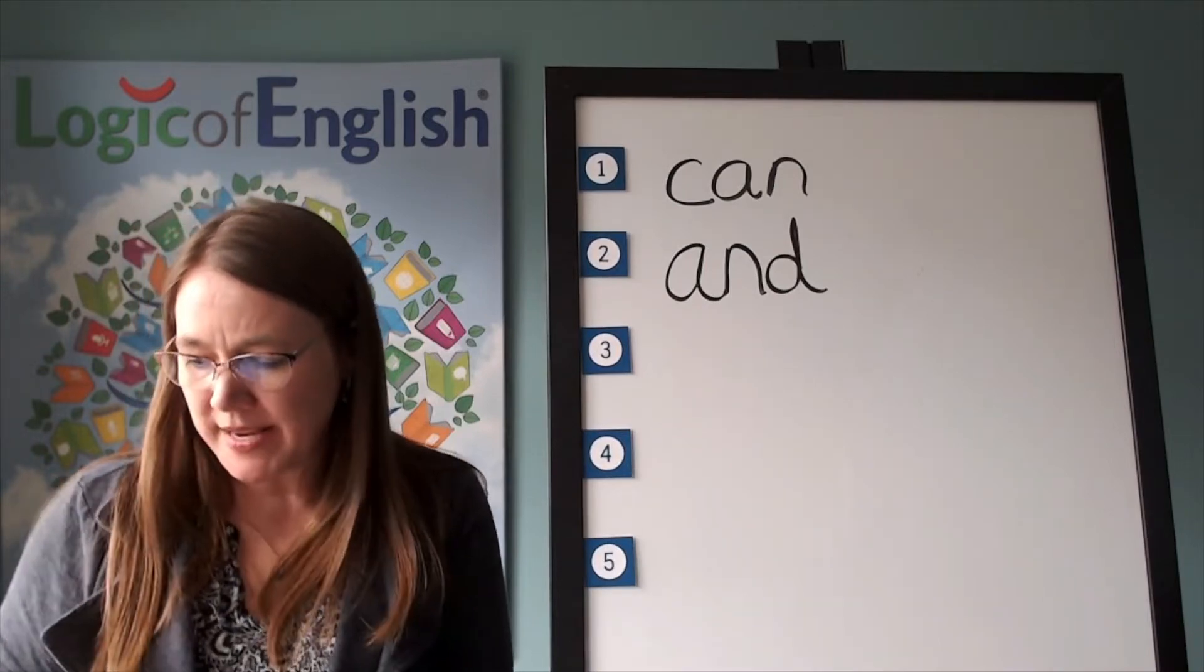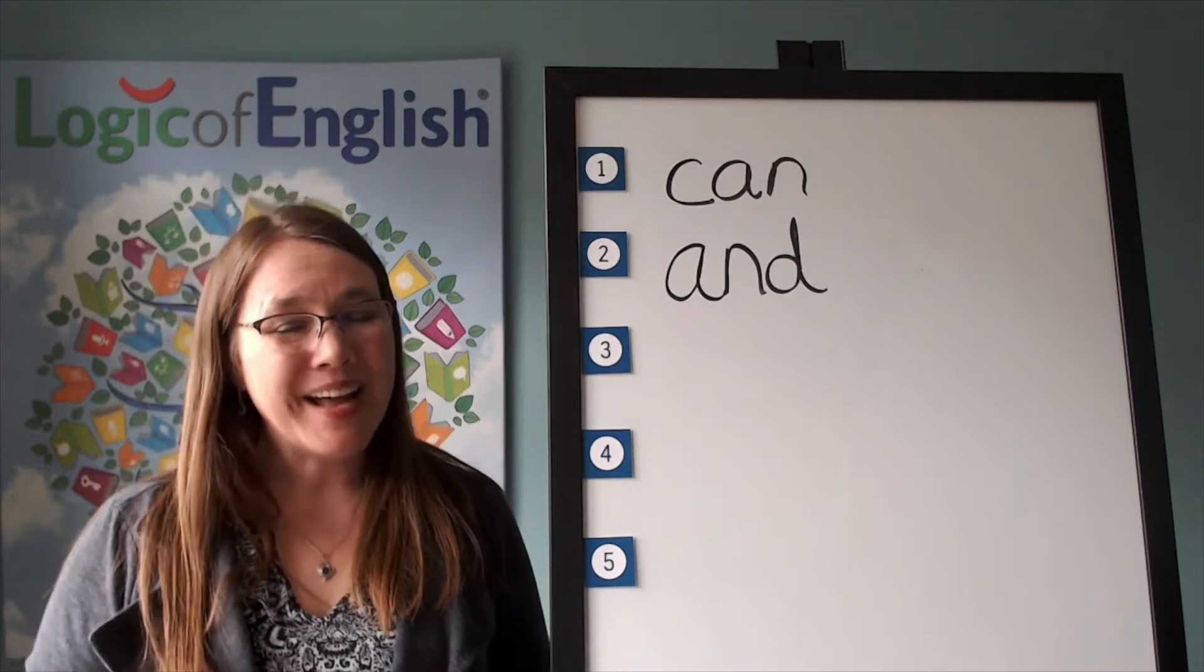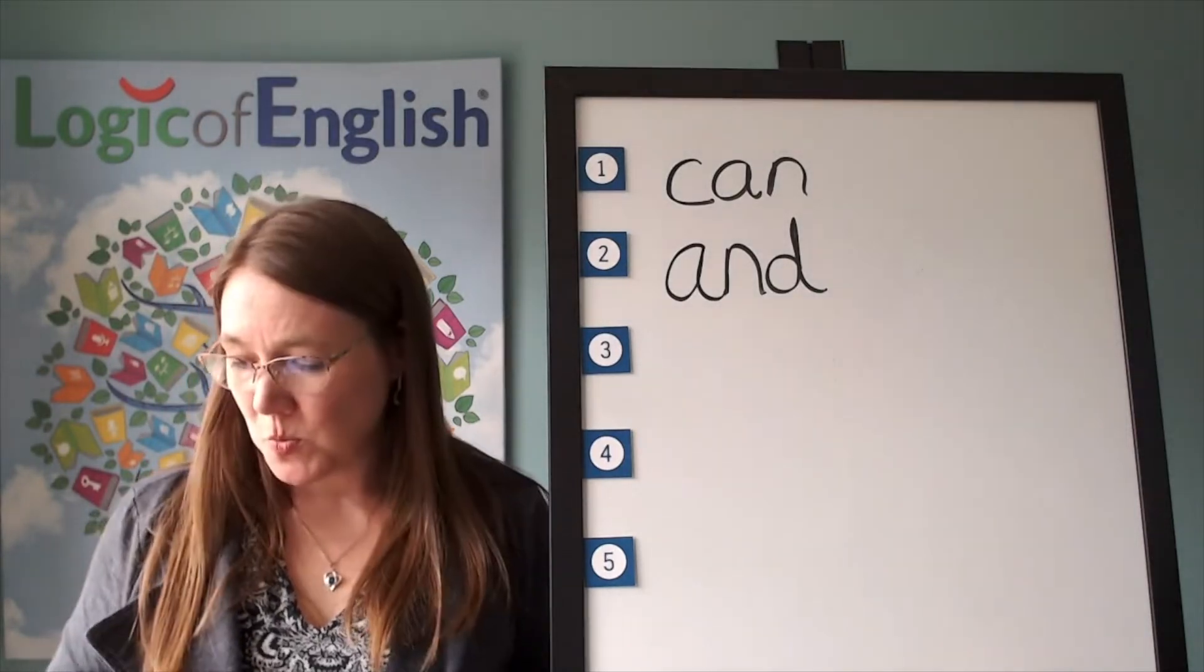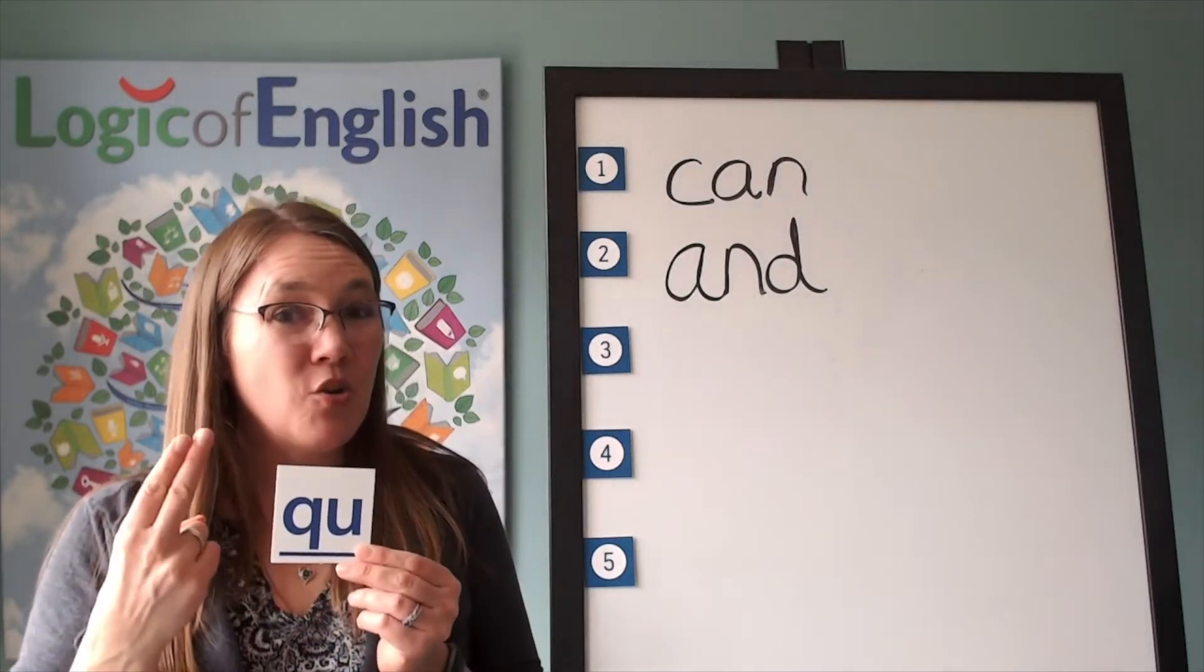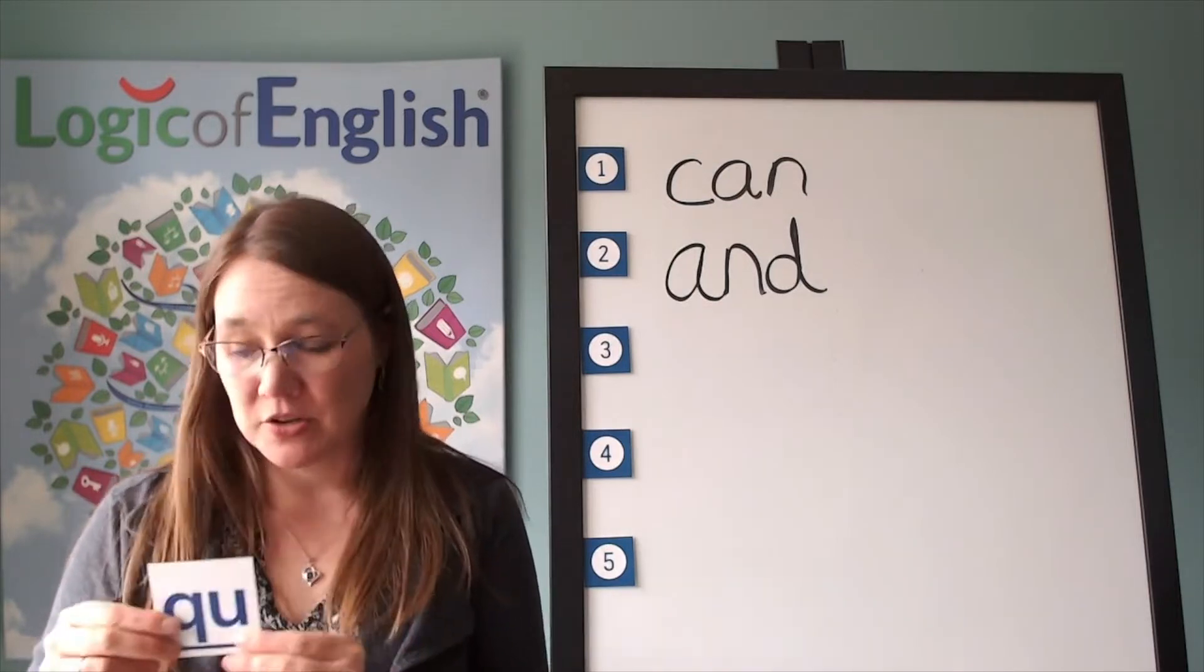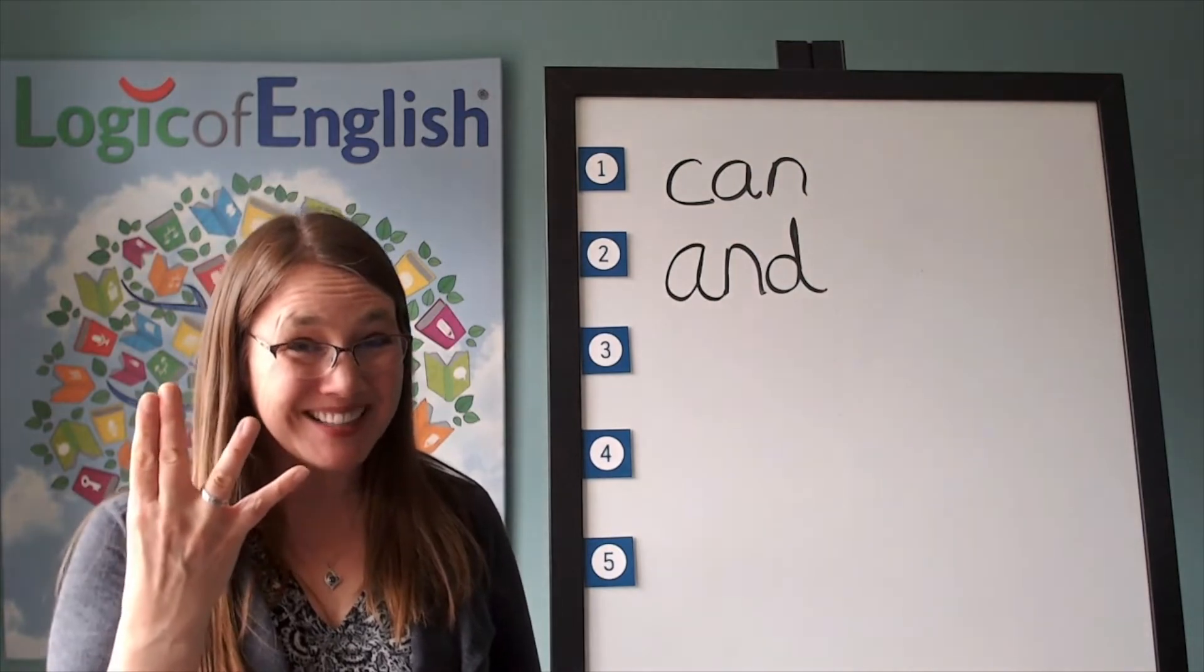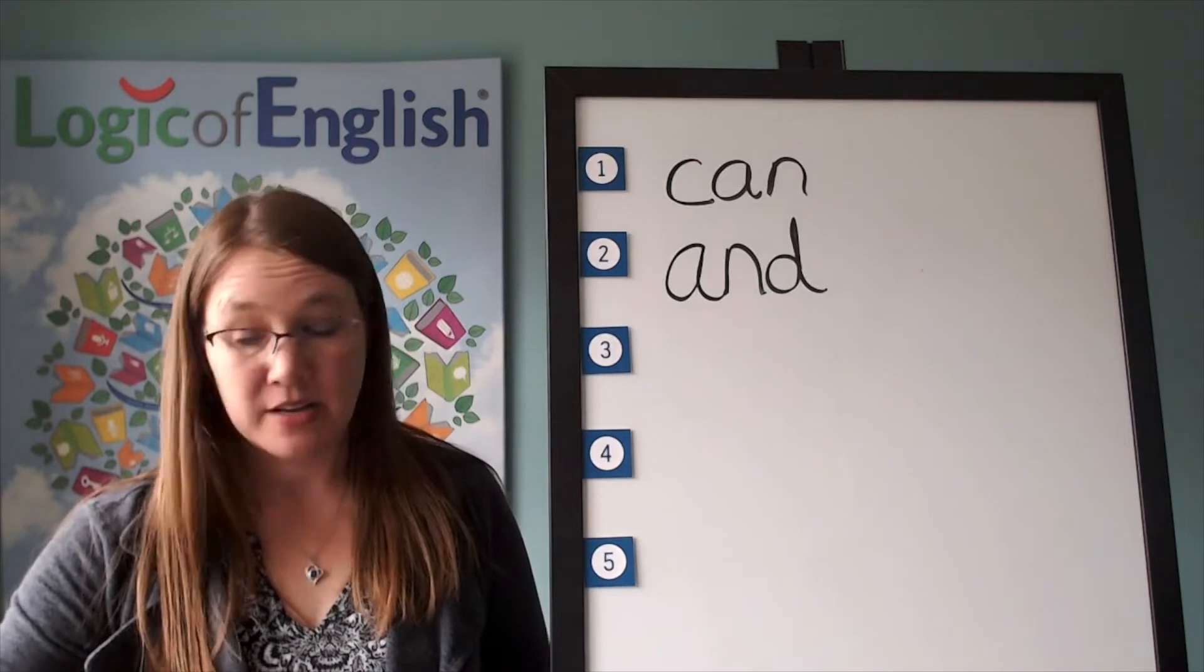The next word is quit. He quit playing the game. Quit. Go ahead and say quit. Quit. Now what sound do you hear at the beginning of quit? Qu. Qu. Look at that. It's this phonogram. So when we sound it out, I'm going to hold up two fingers because this phonogram is spelled with two letters. So let's sound out quit. Qu-I-T. Do you got it? Do you see how to write it? Go ahead and write quit. Sound it out as you write it.